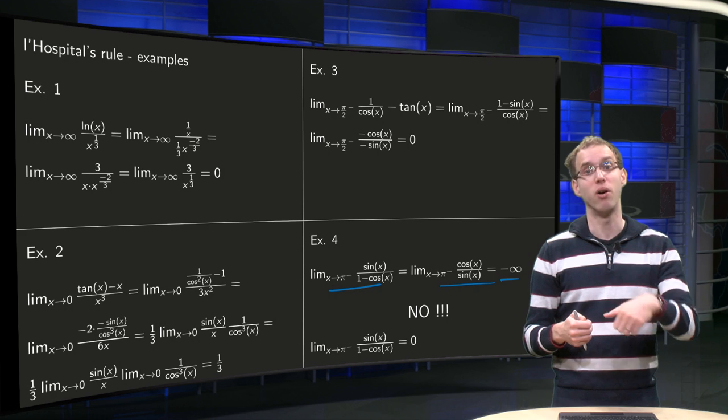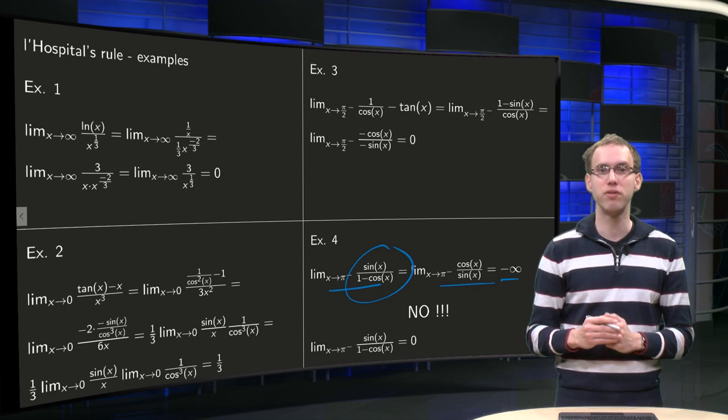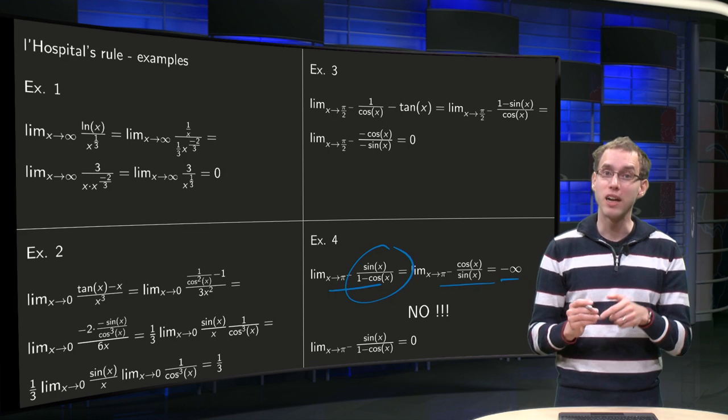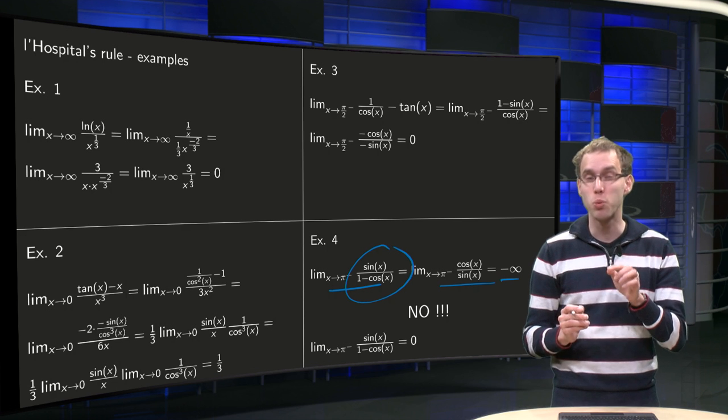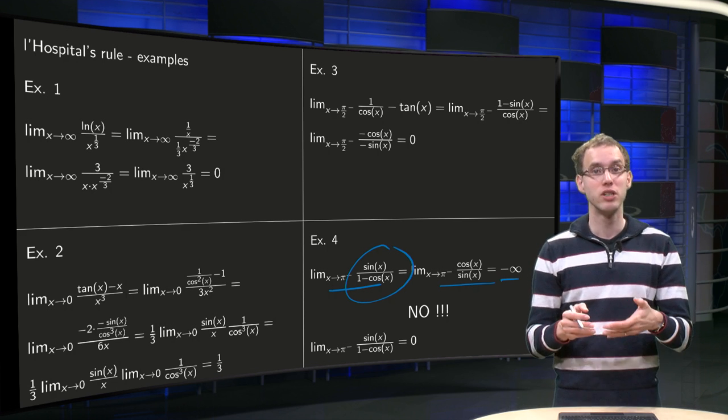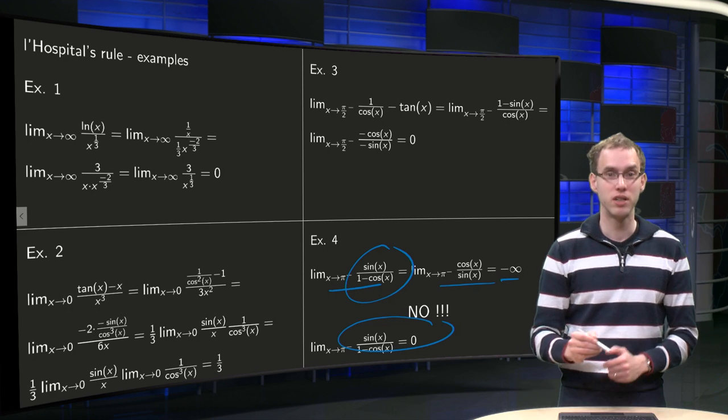If you have 0 over 0, or infinity over infinity. But if you take a closer look at this function, if x goes to pi, then the sine of x is just 0, and 1 minus the cosine of x, the cosine of pi equals minus 1, so you get 1 minus minus 1, it's just 2. So you get something like 0 over 2, so this limit is just 0.